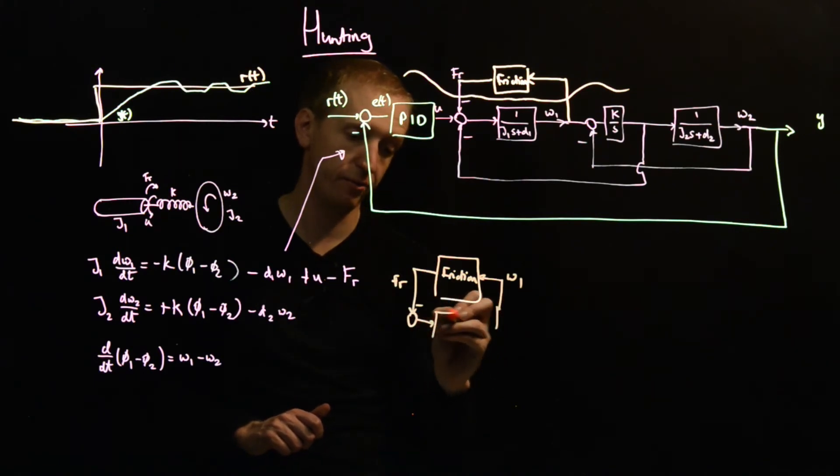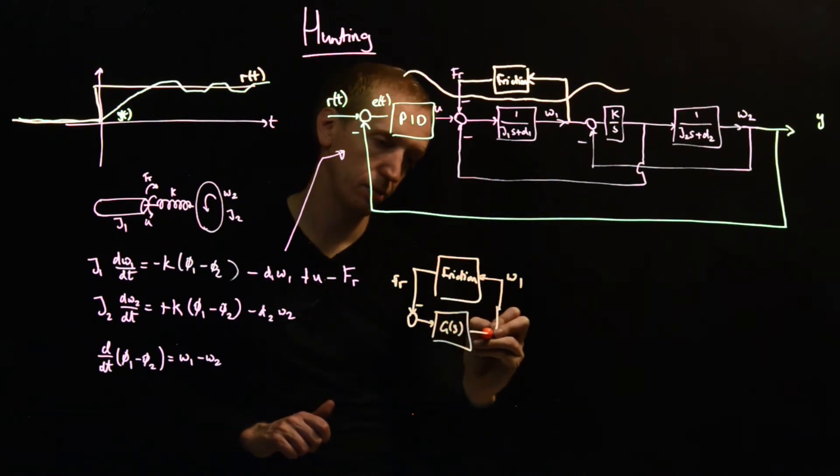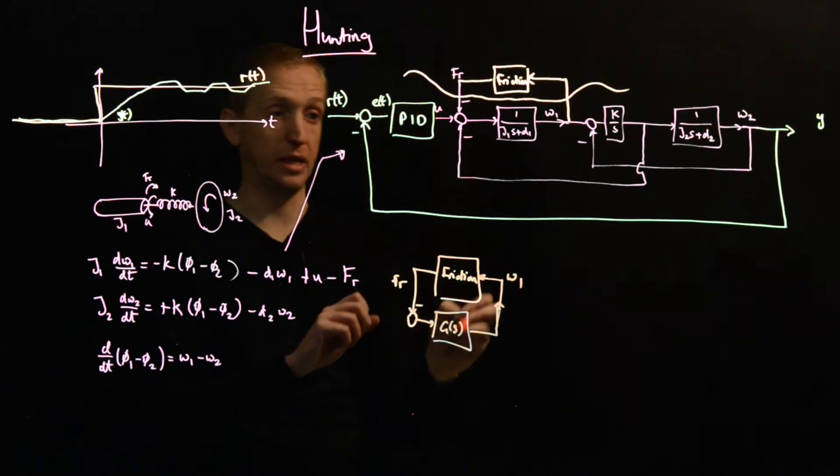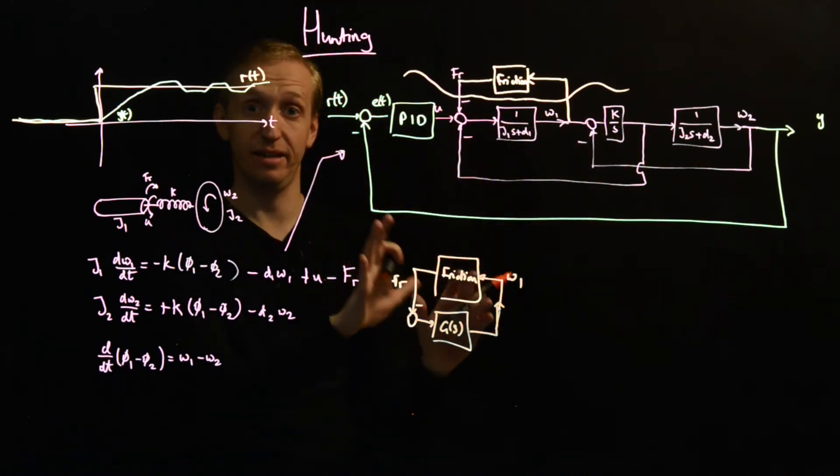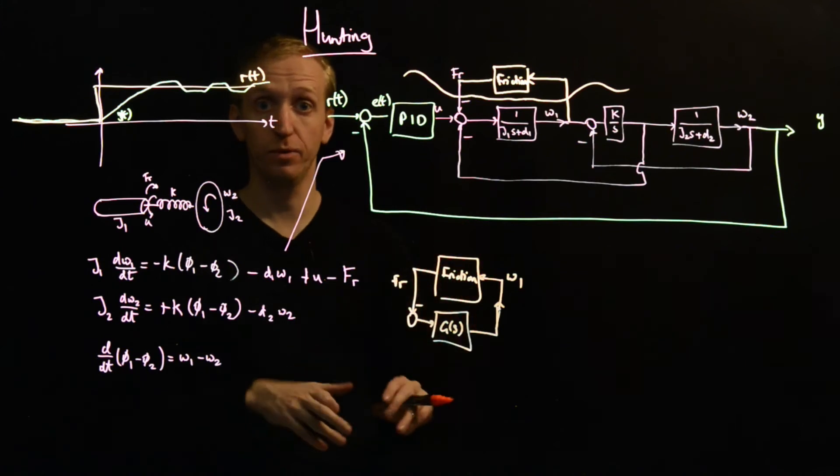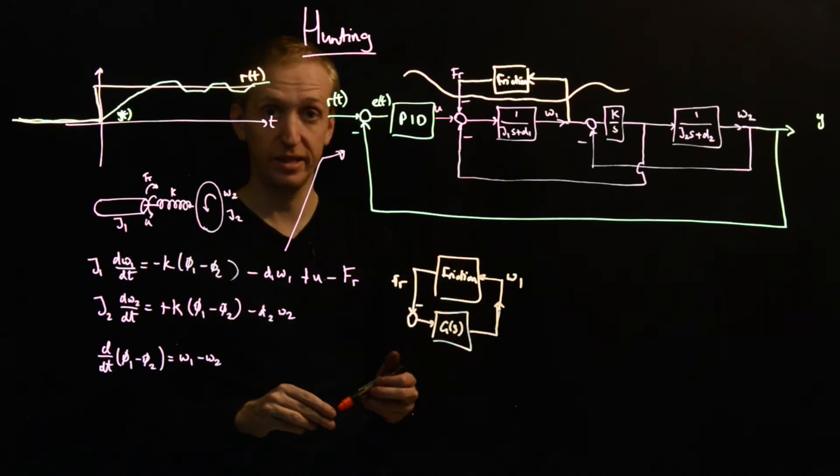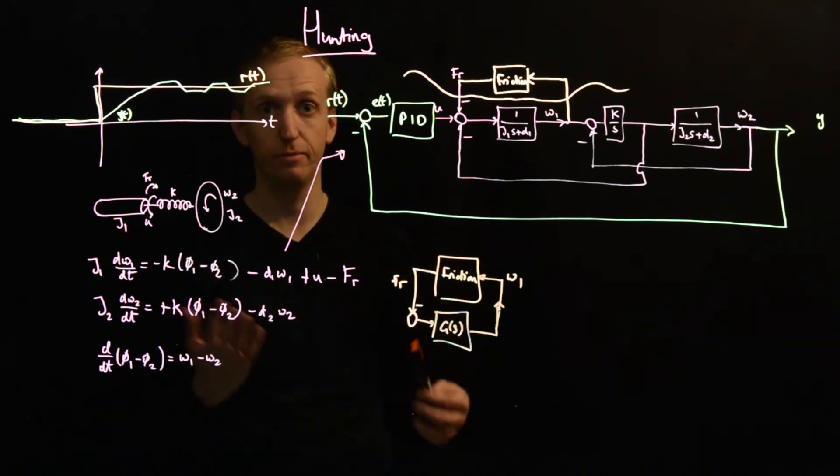So you go and you simplify all of this down and we end up with our friction model. And here we have the friction force FR. Here we have a minus sign. And here we have omega one. And here we have the transfer function G of s, which is the transfer function you get after you simplify down all of these linear pieces. And now this is in exactly the feedback form that we've been studying before for predicting limit cycles with describing functions.